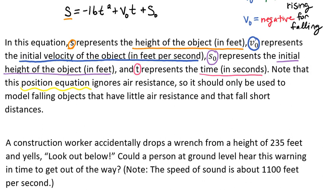Because the object has been dropped rather than thrown, our initial velocity v naught is going to equal 0 seconds. We have an initial height of 235 feet because that's where it was dropped from, so our s naught is 235 feet.